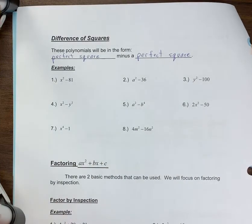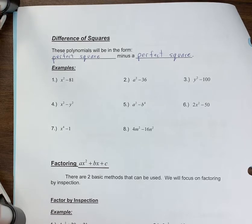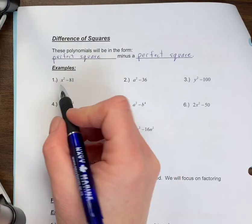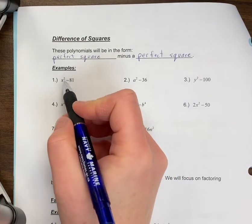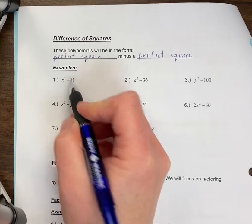All right, now we're going to look at questions that are called difference of squares. Difference of squares are polynomials that will be in the form of a perfect square minus a perfect square. For example, x² - 81. x² is a perfect square, this has to be a minus sign in the question, and 81 is a perfect square.